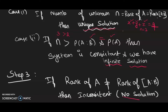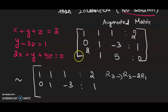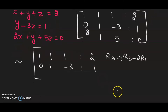The example we discussed in Gauss elimination is consistent and has a unique solution. Now let us see two examples: one with infinite solution and one with no solution. Consider the equations: x + y + z = 2, y − z = 1, and 2x + y + 5z = 0.